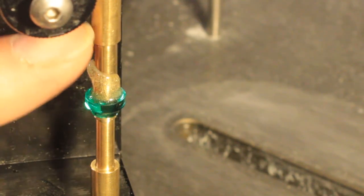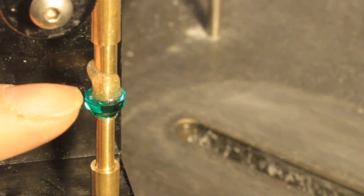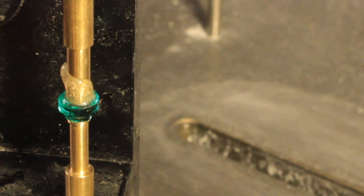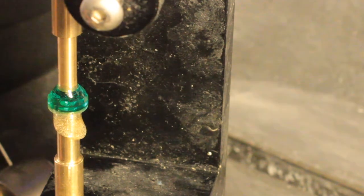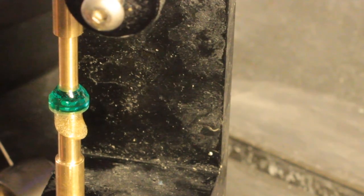And as long as it doesn't get onto the girdle. So you can see there's a little bit of super glue all along the dop and on the stone. So it's just where we want it. So I'll let that harden up and we'll be ready to start cutting the crown.